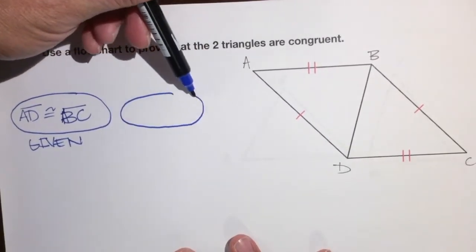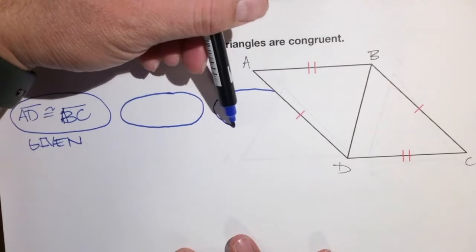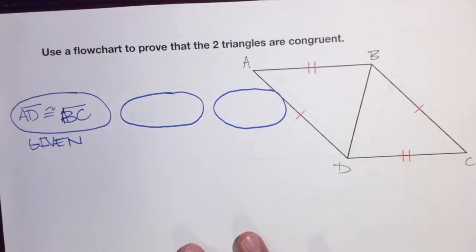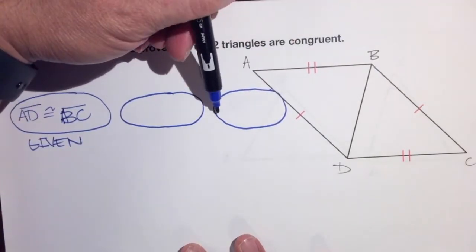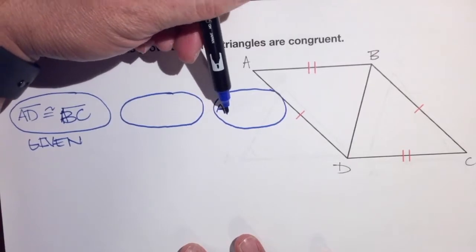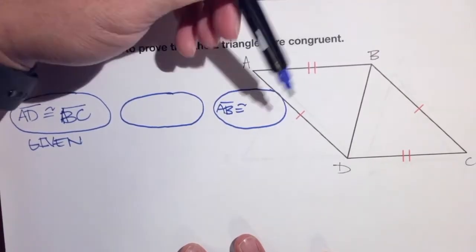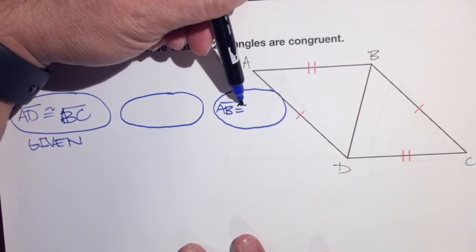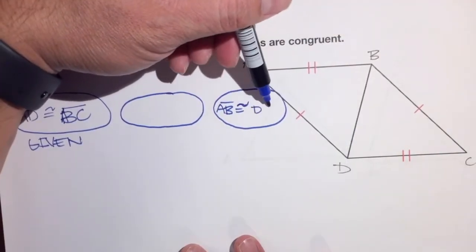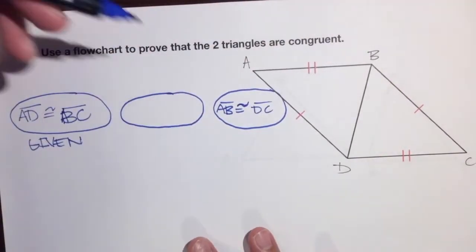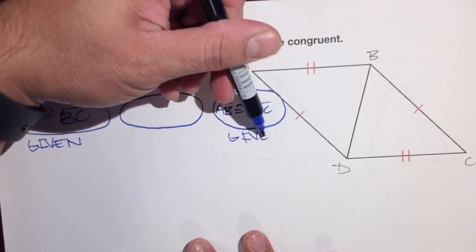Let's put another bubble here. AB is congruent to DC because they have two tick marks, and those tick marks are already there in the diagram. So the reason is given.